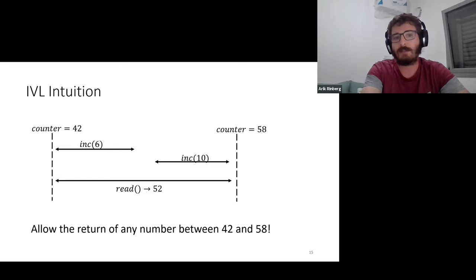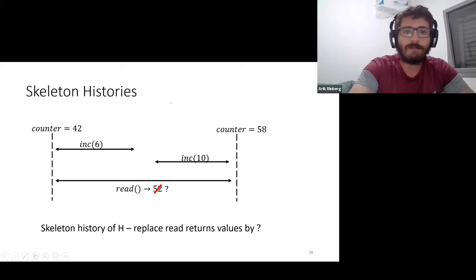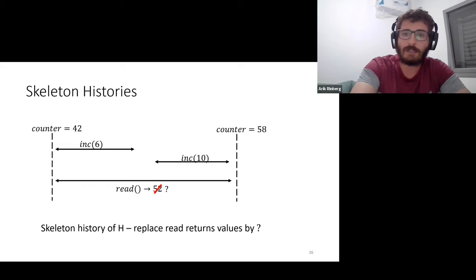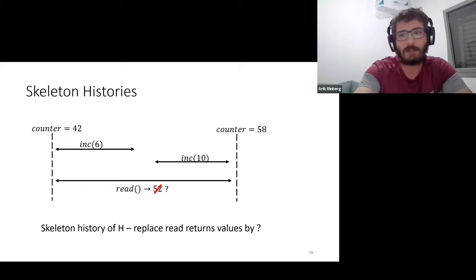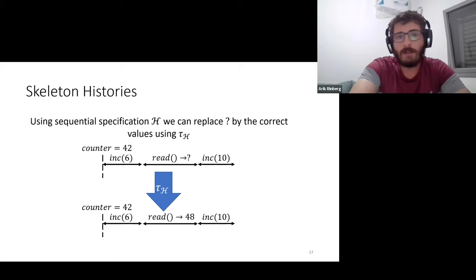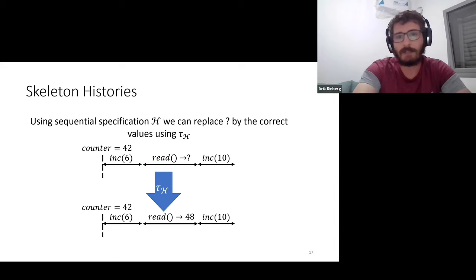There's nothing inherently wrong with any of these numbers, so let's allow the return of any numbers between two bounds. To define IVL, we first define skeleton histories: a skeleton of history H is where we replace the return values of all read operations with a question mark—basically saying we don't know what this is yet. We need to move from skeleton histories to histories with real values. So we define the operator tau, which takes any sequential specification and a sequential history and applies the correct return values under the sequential specification. In the example, the read happens after the increment of 6 where the counter started at 42, so it returns 48 after applying tau.